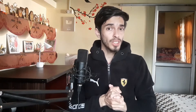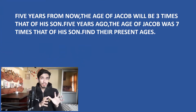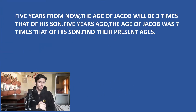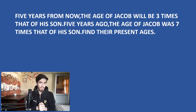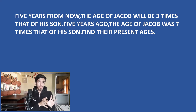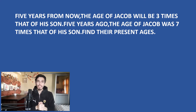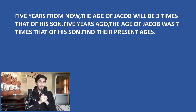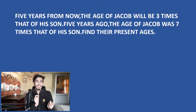So the question is: five years from now the age of Jacob will be three times that of his son. Five years ago the age of Jacob was seven times that of his son. Find their present ages. Now you have an opportunity to pause this video right now and try to solve this question yourself first.